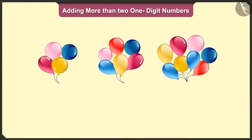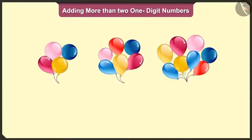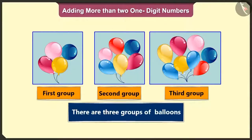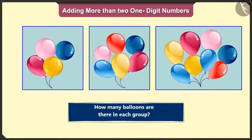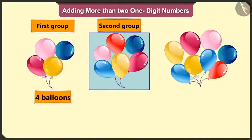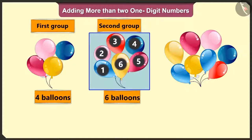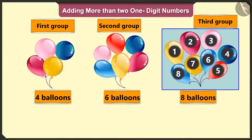Pilloo, can you say how many groups of balloons are there with the seller? Yes, there are three groups of balloons. Can you tell me how many balloons are there in each group? In the first group: one, two, three and four balloons. In the second group: one, two, three, four, five and six balloons. And in the third group: one, two, three, four, five, six, seven and eight balloons.